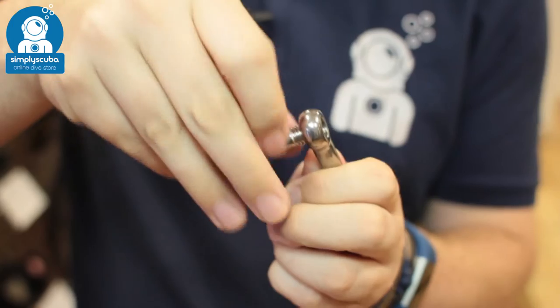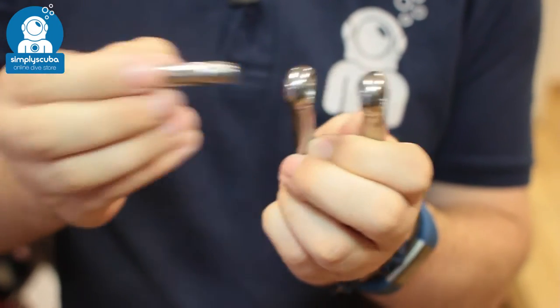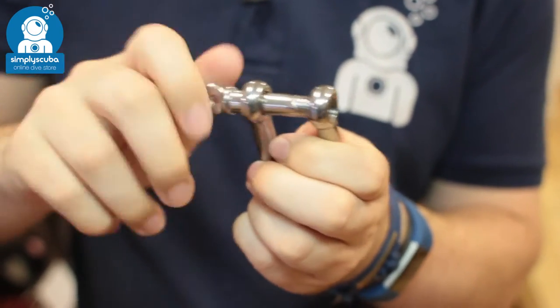You just undo that bar gate, unscrew it and it's going to come out and then screw it back together.